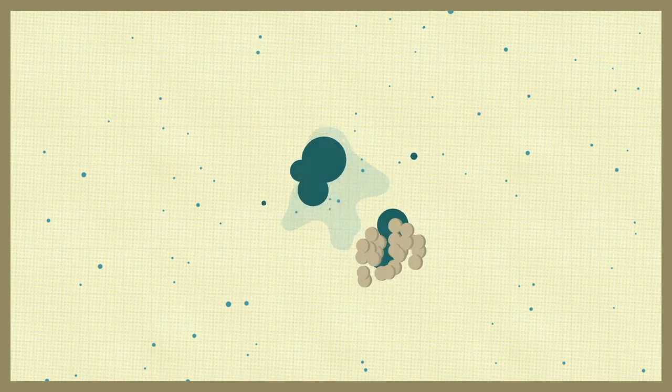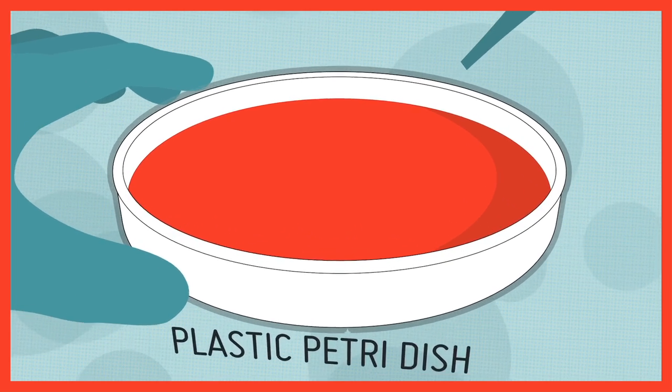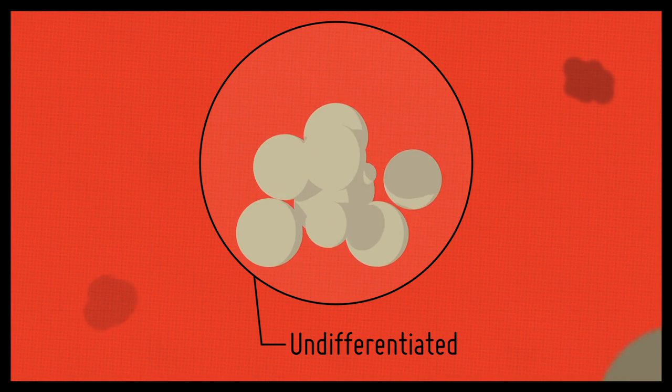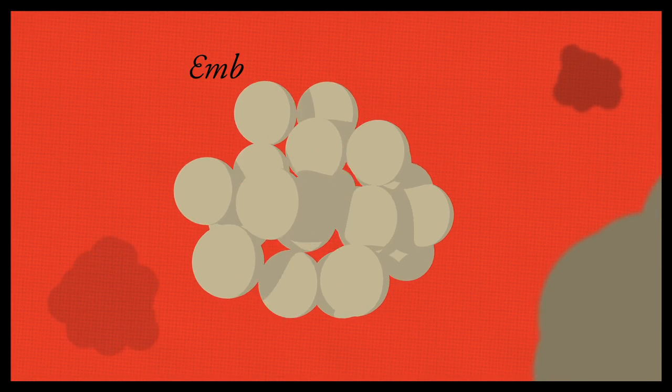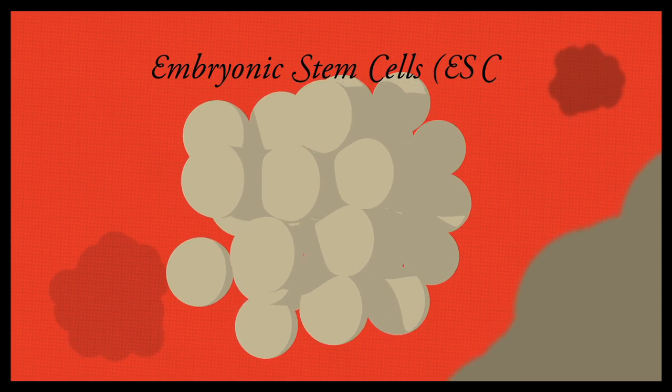If the cells of the inner cell mass are isolated, they can grow indefinitely in a plastic dish and maintain this undifferentiated state. These cells are known as embryonic stem cells, or ES cells.